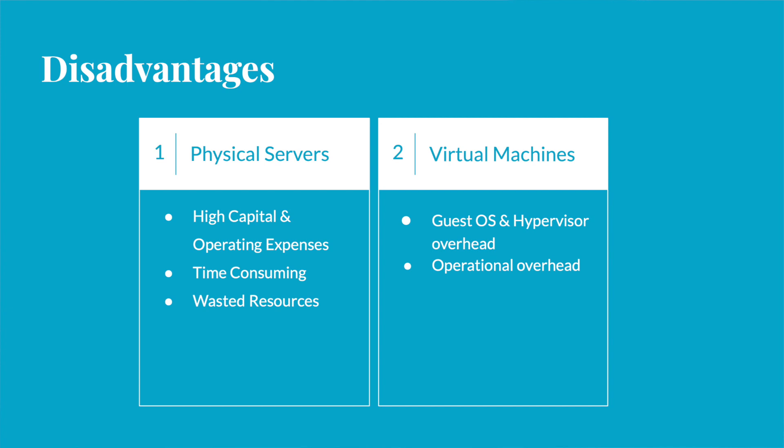Finally, there's the issue of wasted resources. Companies used to buy big physical servers and deploy applications on them, but when the applications run, they don't even consume 10% of the CPU. The 90% is basically a cushion for the application for one or two busy days in a year. So all these resources were mainly wasted for most of the time.